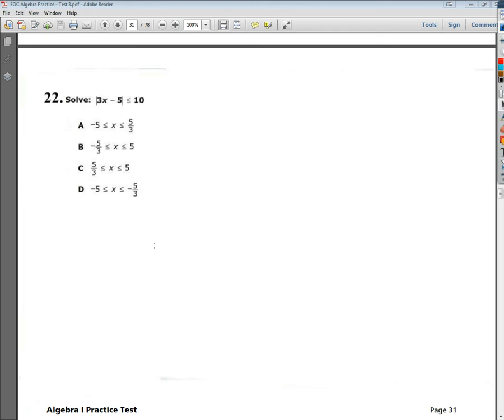Welcome, this is the Tennessee end-of-course practice test number 3 for Algebra 1, question number 22. Like, you needed more numbers in your life. But anyway, the question says, solve the absolute value of 3x minus 5 is less than or equal to 10.